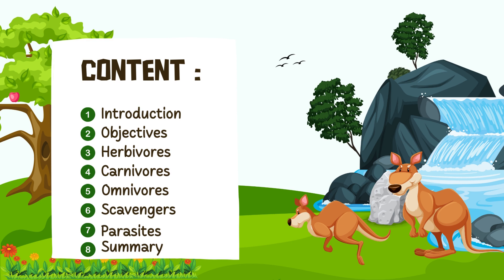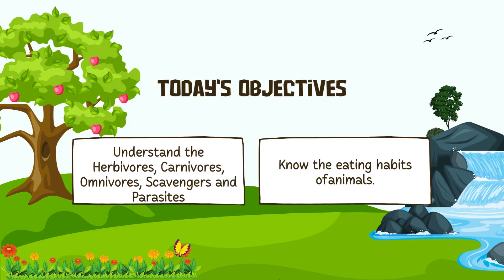First of all, all living organisms need food to grow and remain healthy. Food gives us energy to work and play. Like that, animals also need food to grow. Depending on their food habits, animals can be divided into the following groups.